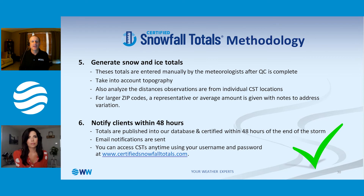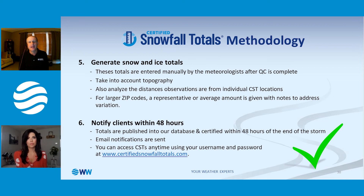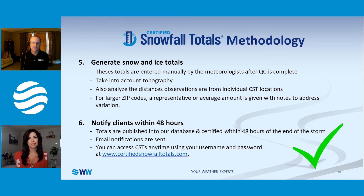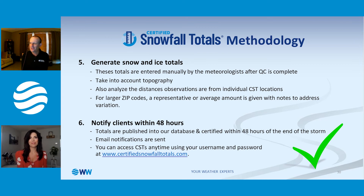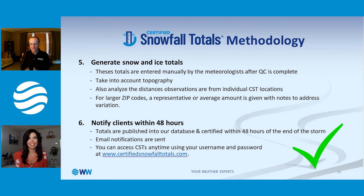When we do have a larger zip code, we try to get an average for that entire area. Usually we're within a tenth or two of what actually fell. We take into account the topography and get to know the area we're doing CSTs for. For example, the western side of Vermont — after a nor'easter leaves you might have 6 to 12 inches of snow, but then that upslope kicks in with the west wind and that whole middle of Vermont just snows for two more days.